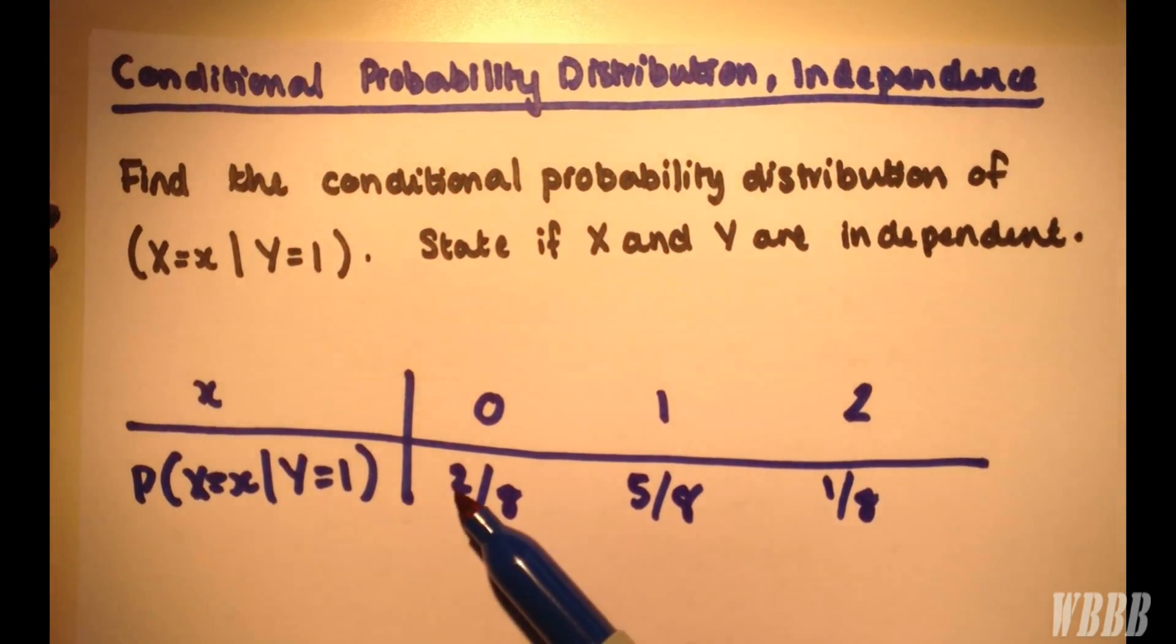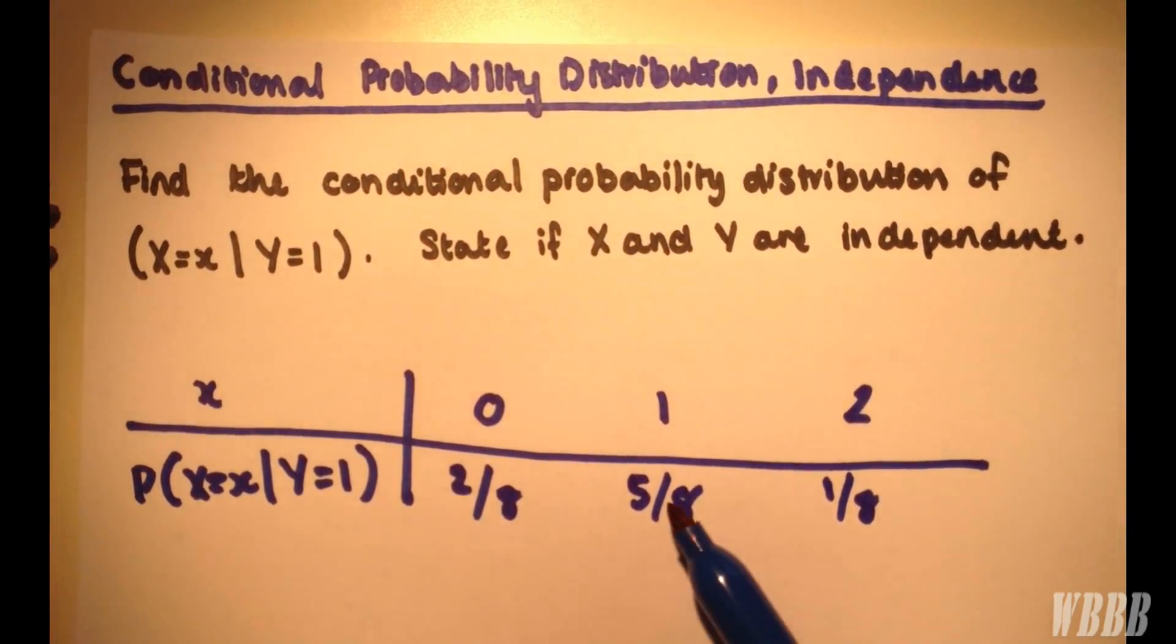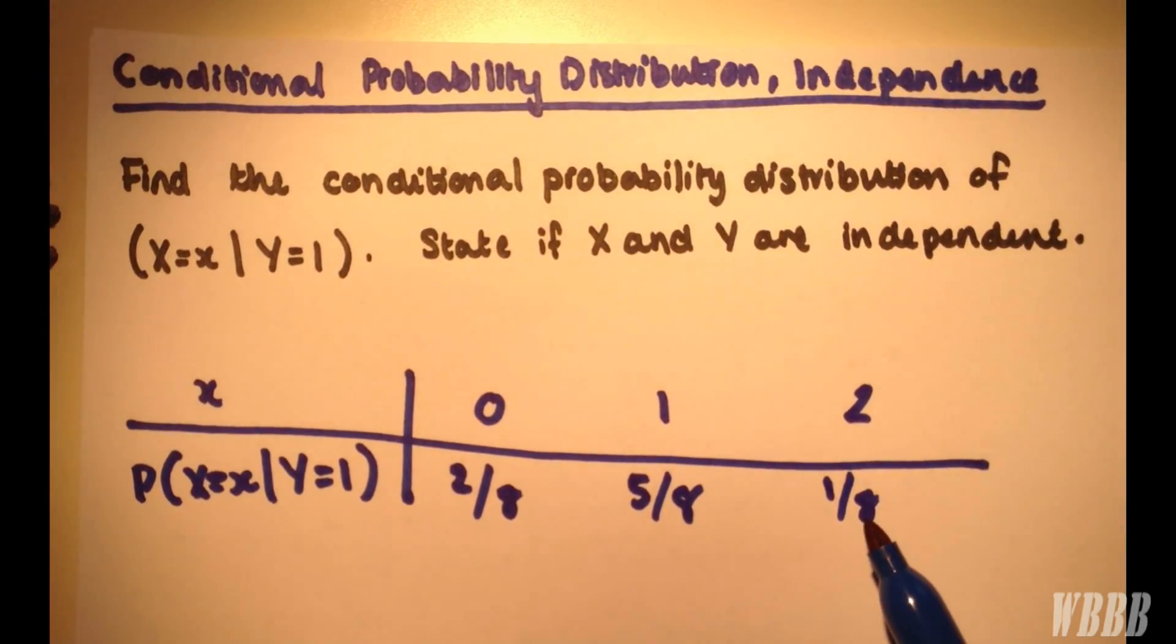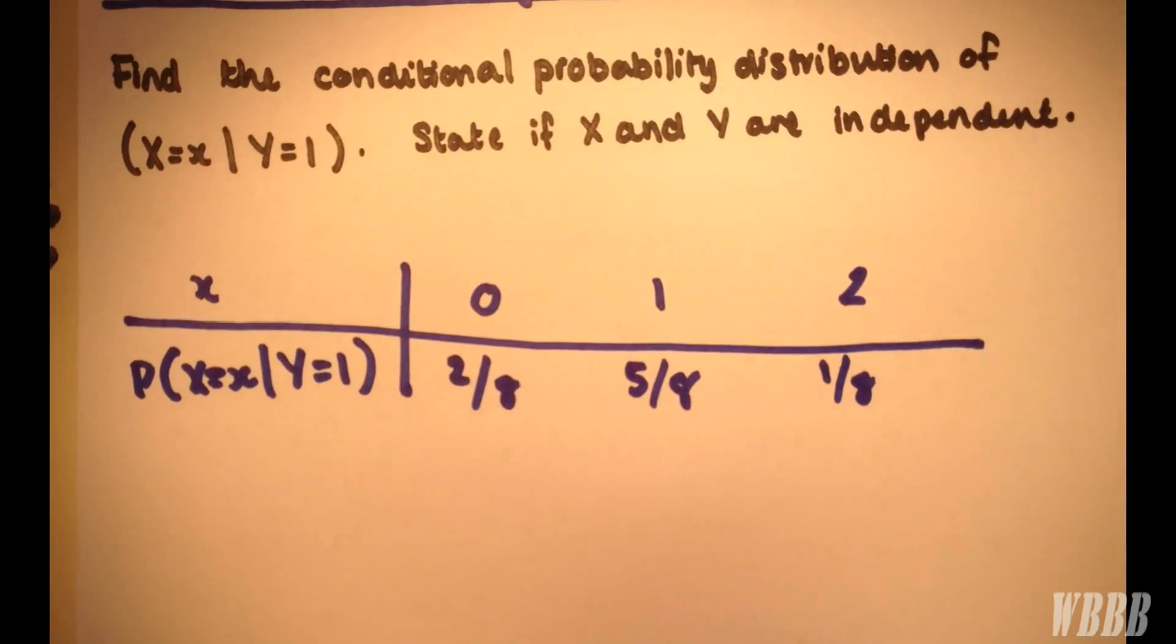But here, we do have 6 over 24, but we don't have 9 over 24 here, and we certainly do not have 10 over 24 here. So,